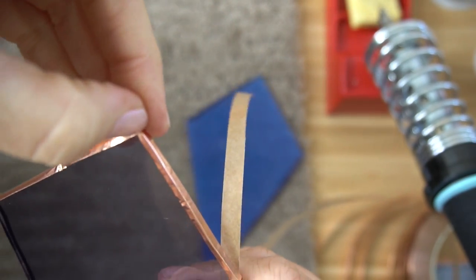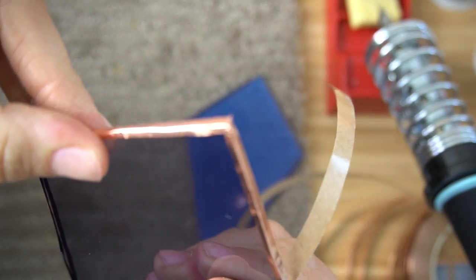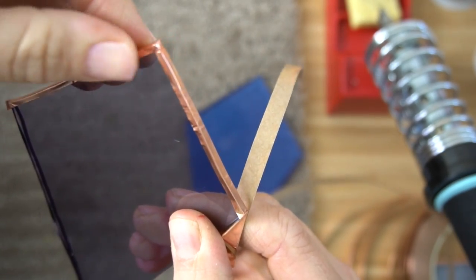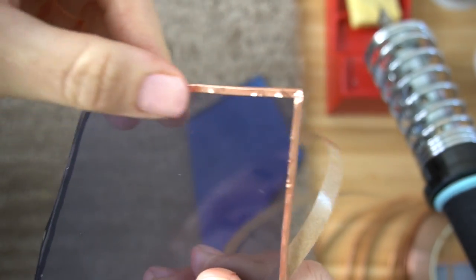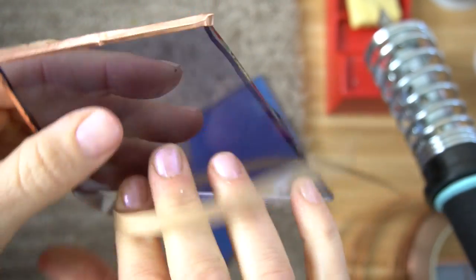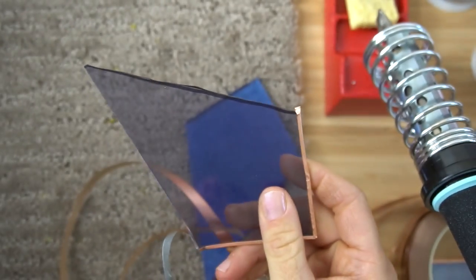On the corner, just try to fold it over so you get this nice angle. Try to get it to be as straight of a line as you can possibly get. Continue doing that same thing around your whole piece of glass.